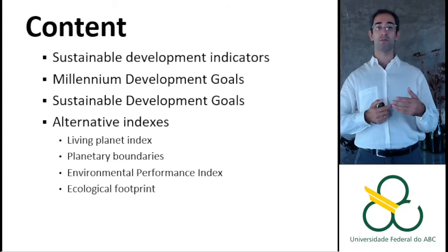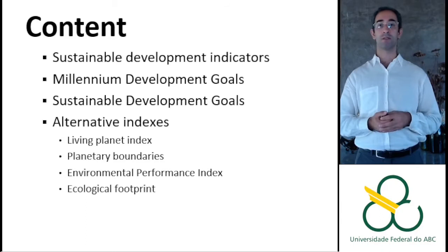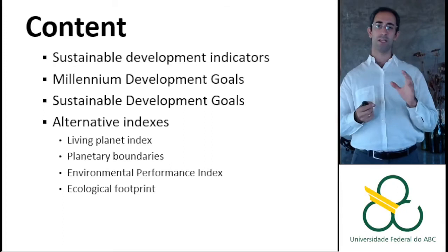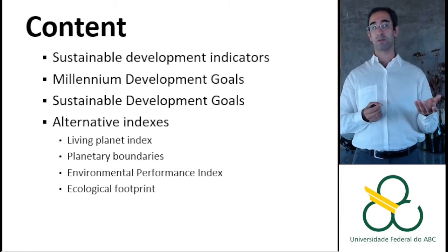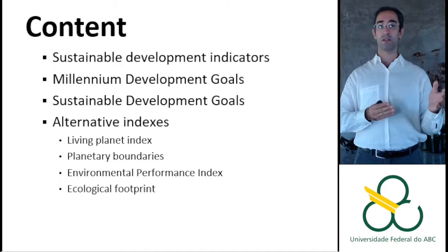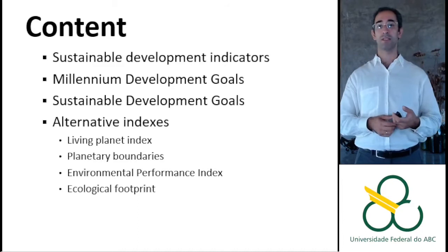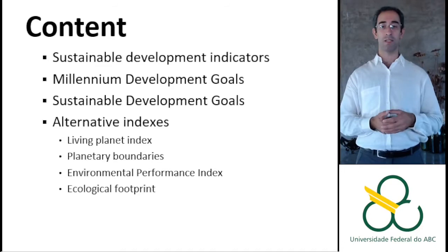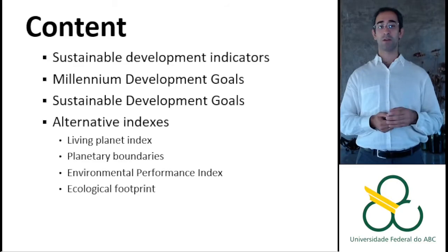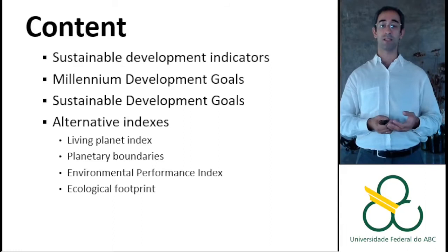We will make a historical perspective starting with the Millennium Development Goals, then the Sustainable Development Goals that followed afterwards — the Millennium Development Goals from 2002 to 2015, and then the Sustainable Development Goals, or SDGs, from 2015 to 2030. After that, I will discuss some alternative and complementary indexes, like the Living Planet Index, Planetary Boundaries, Environmental Performance Index, and Ecological Footprints. There are many others, some very similar to each other. I selected these because they are conceptually interesting and can bring reflections for discussion.